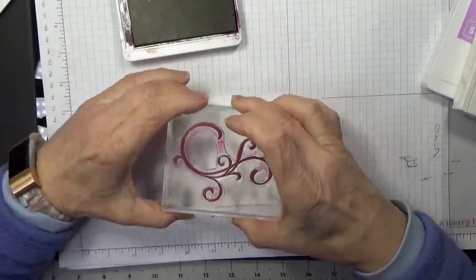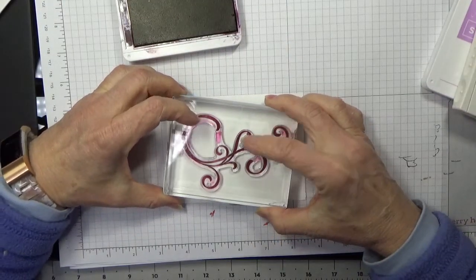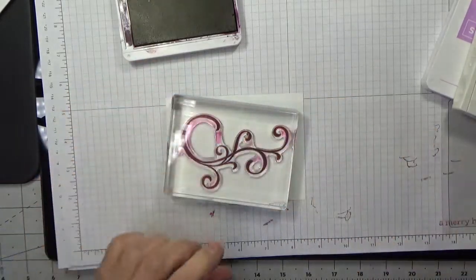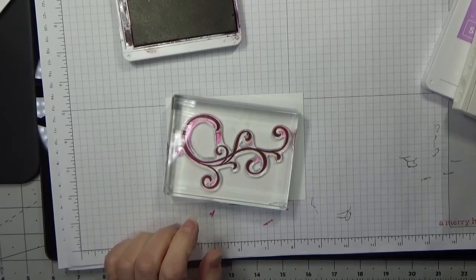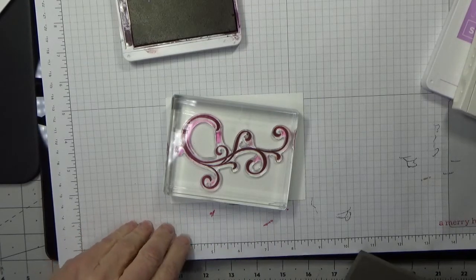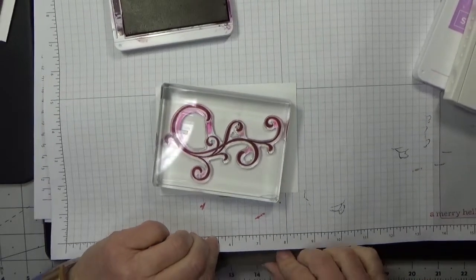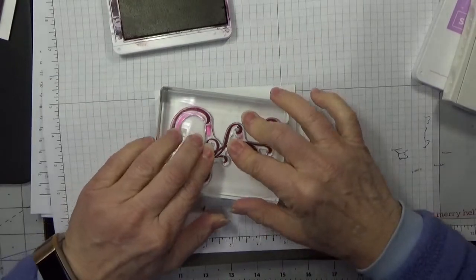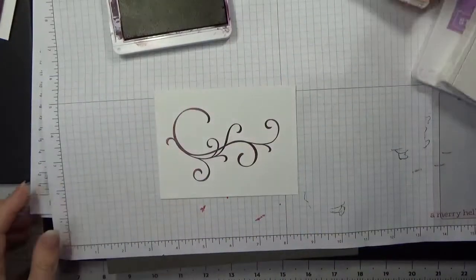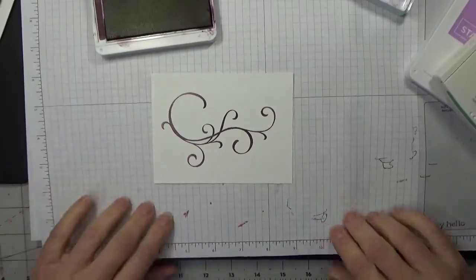I forgot to put my Stampin' Pierce pad underneath, so if you forget, you can just slide it under, just like that. Very carefully. There we go. So we have one image there.